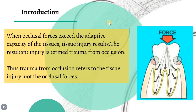We know that the periodontium attempts to accommodate to the forces exerted on the crown. This adaptive capacity varies in different persons and in the same person at different times. So when occlusal forces exceed the adaptive capacity of the tissue, tissue injury will result. The resultant injury we name as trauma from occlusion, which refers to the tissue injury, not the occlusal forces.